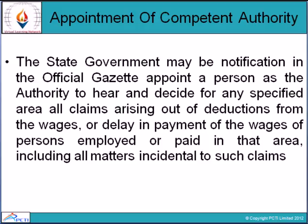Appointment of competent authority: the state government may by notification in the official gazette appoint a person as a competent authority to decide for any specified area all claims arising out of deductions from wages or delay in the payment of wages of persons employed or paid in that area, including all related matters.